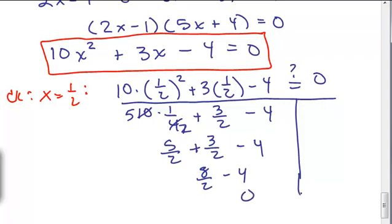So 1 half is the solution. And then you could also check that negative 4 fifths is also a solution. So that's one way to do it. Keep going. I'm going to show you some formulas you could use to do this problem.